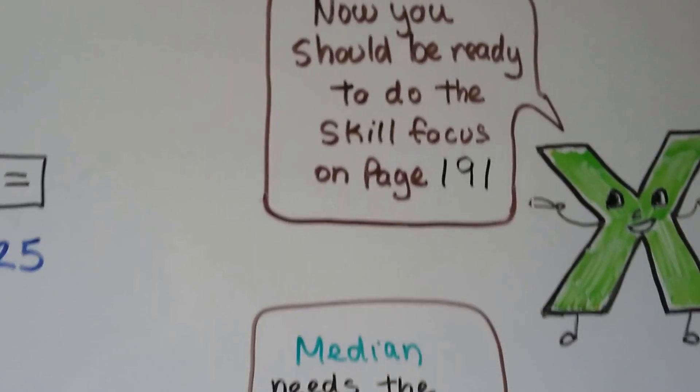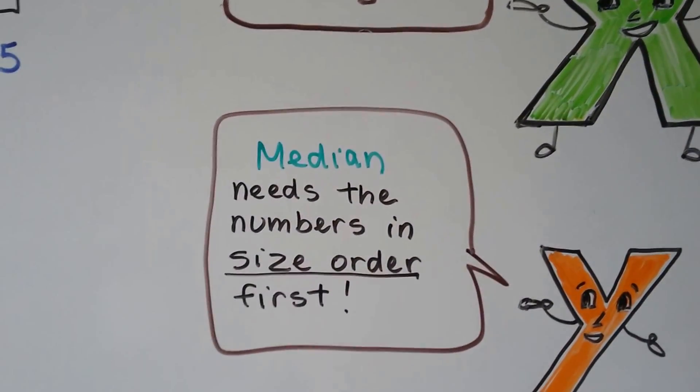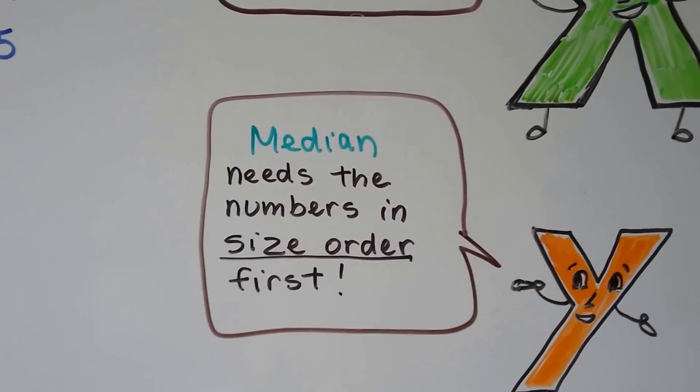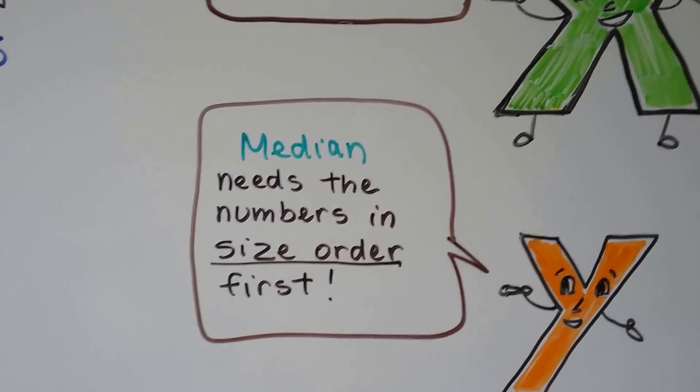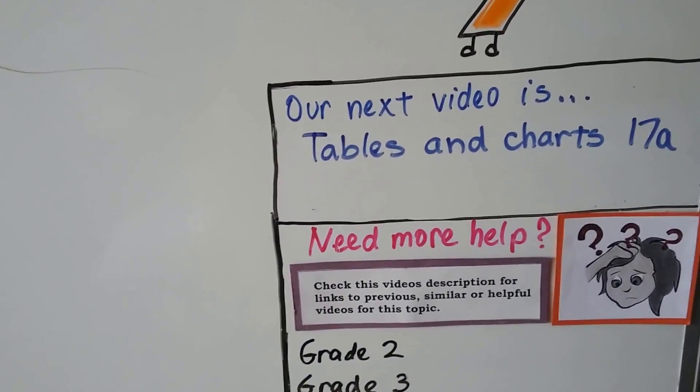You should now be ready to do the skill focus on page 191. And just remember the median needs the numbers in size order first before you pick that middle number, or find the average of the two middle numbers.